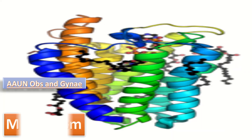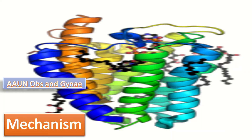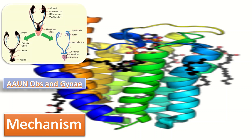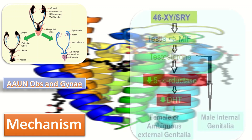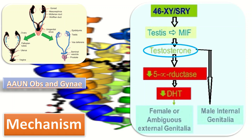The mechanism of 5-alpha reductase deficiency: within the first few months of development, the testes develop in the male fetus and start producing testosterone, a male steroid hormone belonging to the class called androgens. Testosterone is released into the blood and a fraction of it gets converted into dihydrotestosterone by 5-alpha reductase. Deficiency of dihydrotestosterone results in female or ambiguous external genitalia.